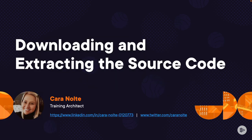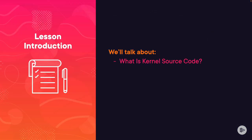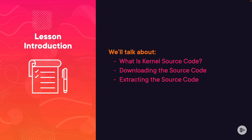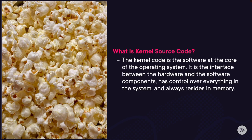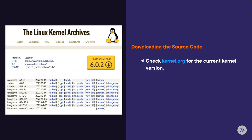Hello, and welcome to this lesson, Downloading and Extracting the Source Code. We'll talk about what kernel source code is and how to download and extract it. The kernel code is the brain of the operating system — it's at the center of everything, acting as an interface between the hardware and the software. Since it has control over everything in the system, it needs to be readily available at all times, so it always resides in memory. We'll download the source code at kernel.org.